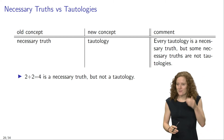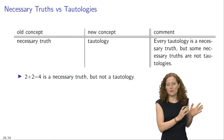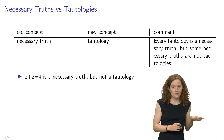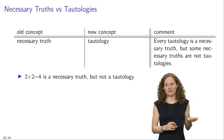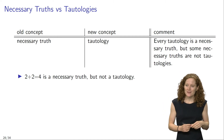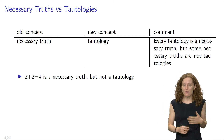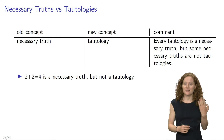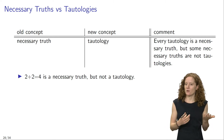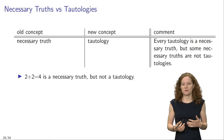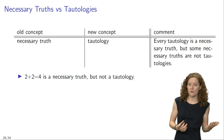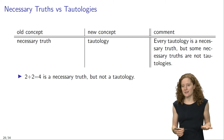For example, the sentence '2 plus 2 equals 4' is a necessary truth, but it is not a tautology. Why is it a necessary truth? We said all mathematical truths are necessary, given that their truth does not depend on what the world is like. And so, since '2 plus 2 equals 4' is a mathematical truth, it is a necessary truth.